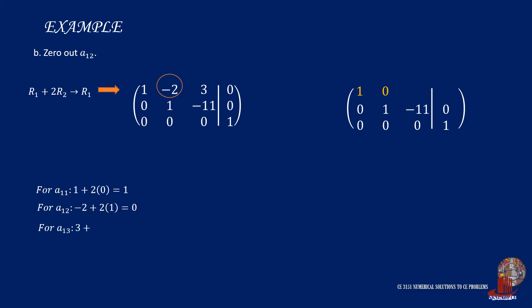Element 1,3 has 3 plus twice of negative 11, and that is negative 19. For the constants, we get 0 plus twice of 0, giving just 0.